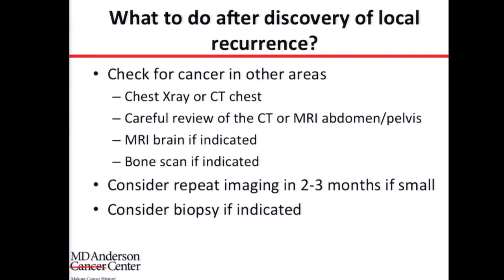Sometimes we need to do a biopsy. Sometimes the lesion on CT or MRI is very obviously cancer, but sometimes it's not — it could be scar tissue or even a tiny accessory piece of spleen, which some patients have as a normal variation. We do a biopsy especially when the appearance on CT scan doesn't clearly indicate a recurrence of kidney cancer.